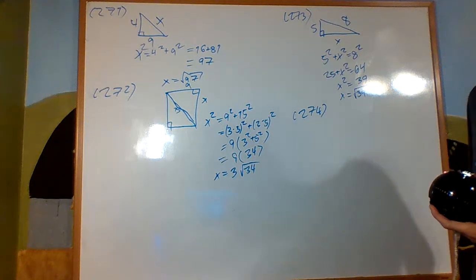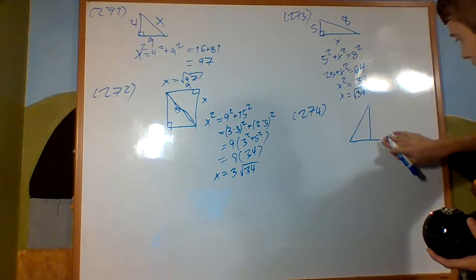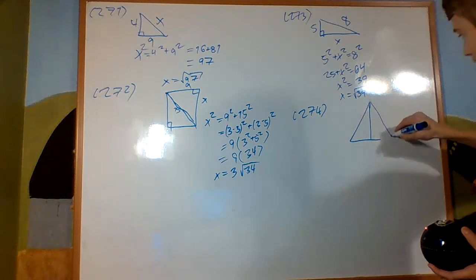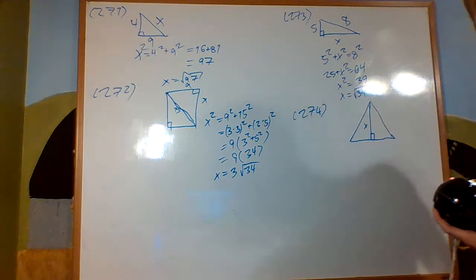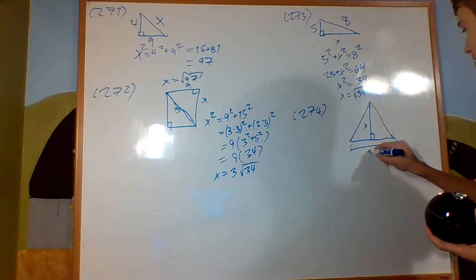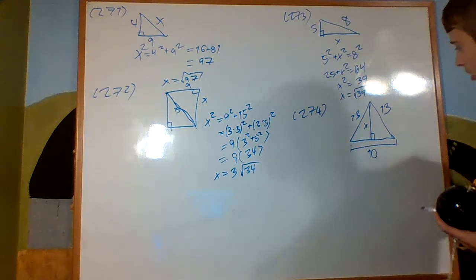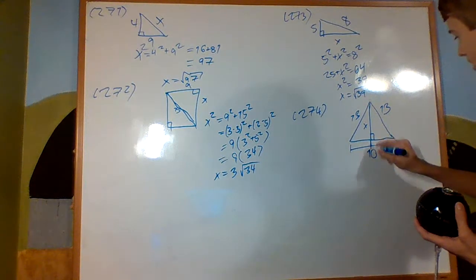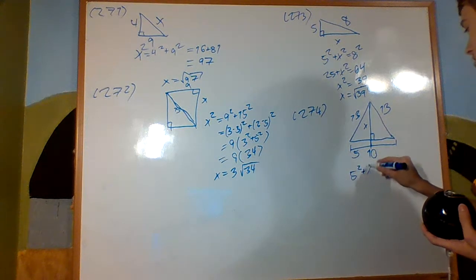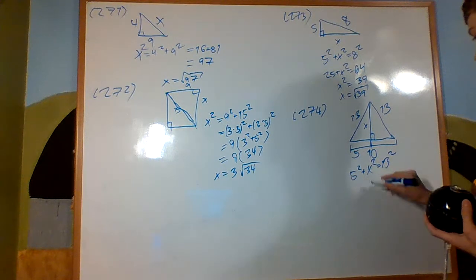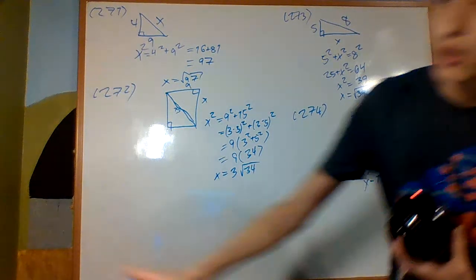Problem 274: an isosceles triangle with a bisector dropped from the apex. The base is 10 and the equal sides are 13. The bisector creates a right angle, so half the base is 5. Then 5 squared plus X squared equals 13 squared. The answer is X equals 12 — a Pythagorean triple.